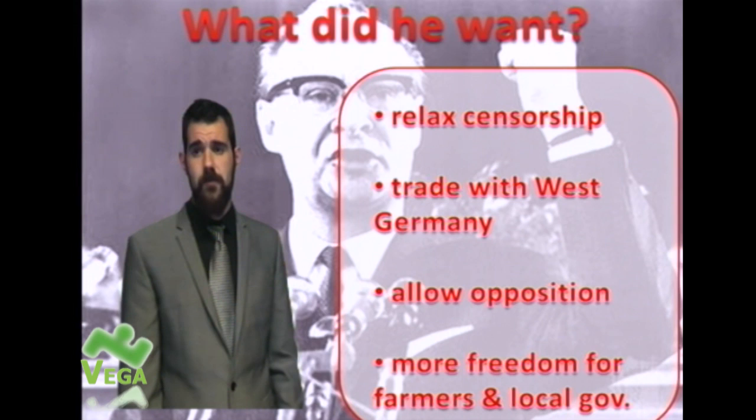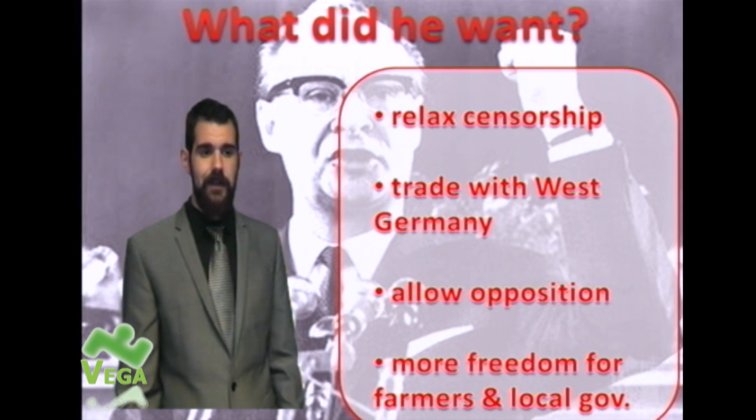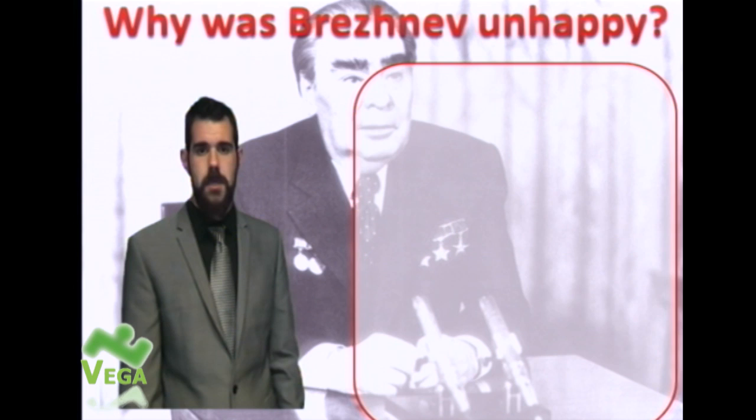He wants more freedom both for farmers and for local government. Local government ties into this idea of opposition — giving them more autonomy to run themselves, so they're not listening to Moscow all the time. And farmers are really struggling with collectivisation and the communist way of doing things.